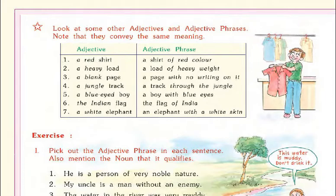Fifth: 'a blue-eyed boy' — adjective phrase: 'a boy with blue eyes.' Sixth: 'the Indian flag' — adjective phrase: 'the flag of India.' Seventh: 'a white elephant' — adjective phrase: 'an elephant with a white skin.' In all these adjective phrases, the meaning is not changing. These all adjective phrases and adjectives convey the same meaning.